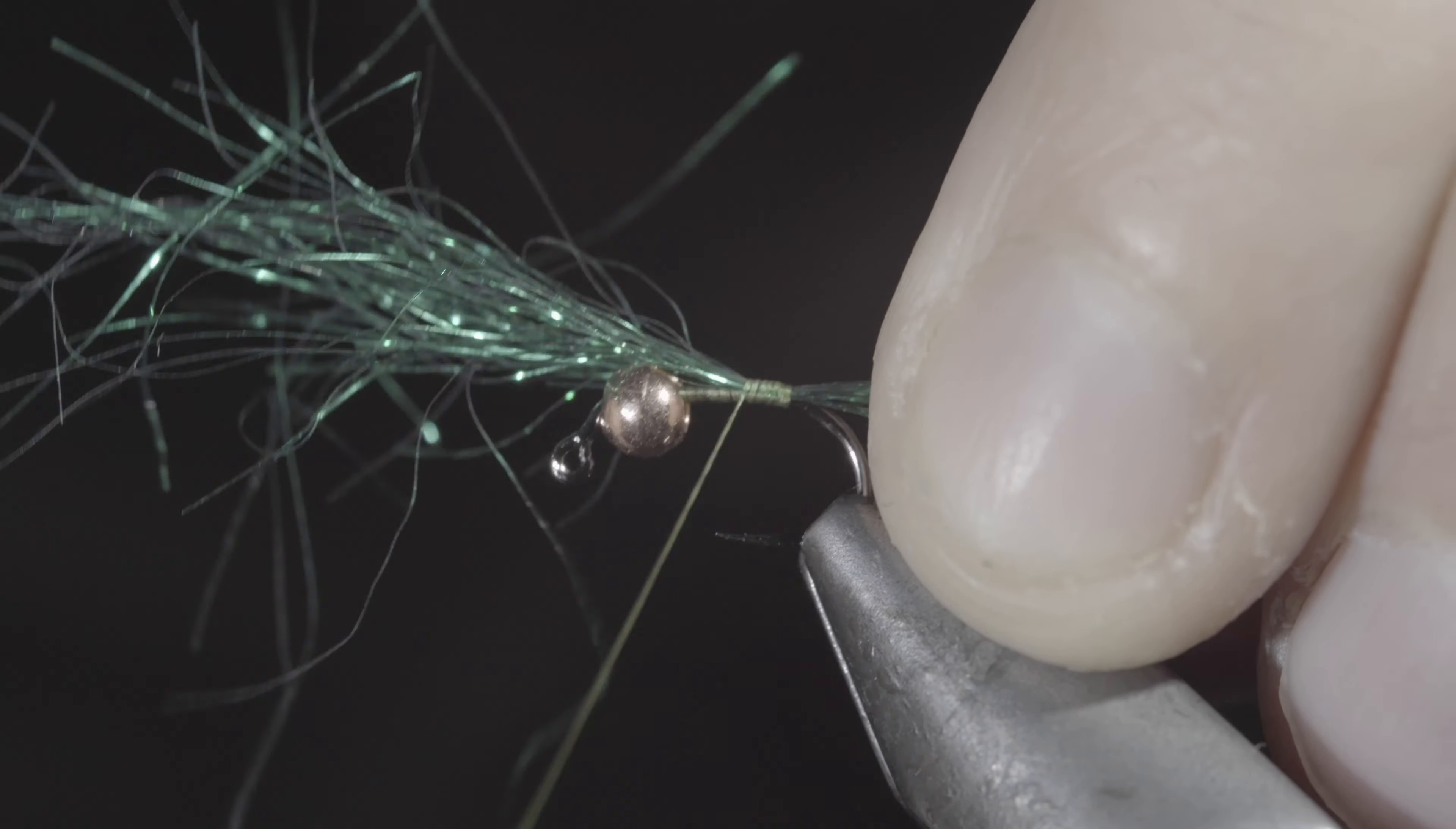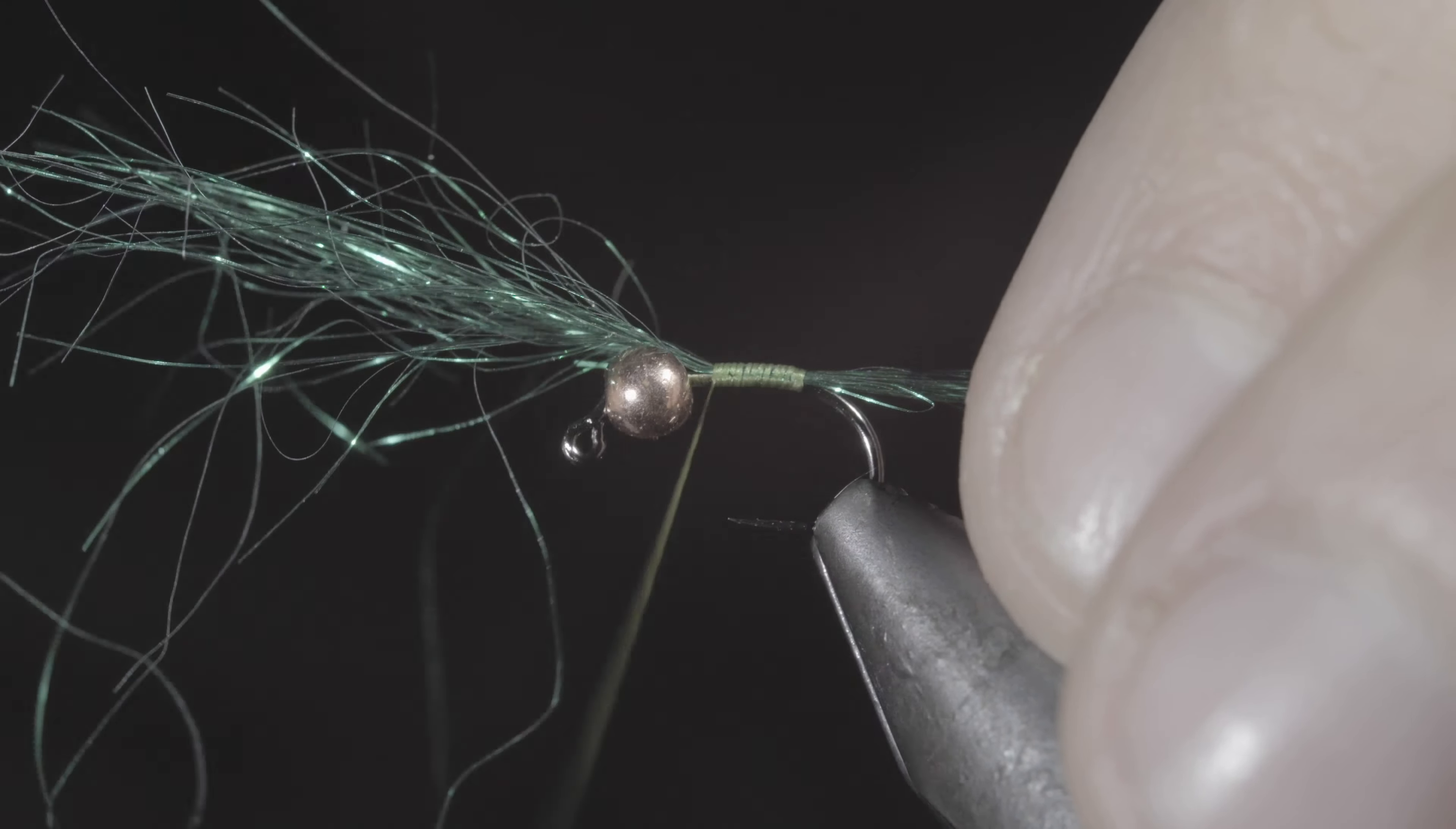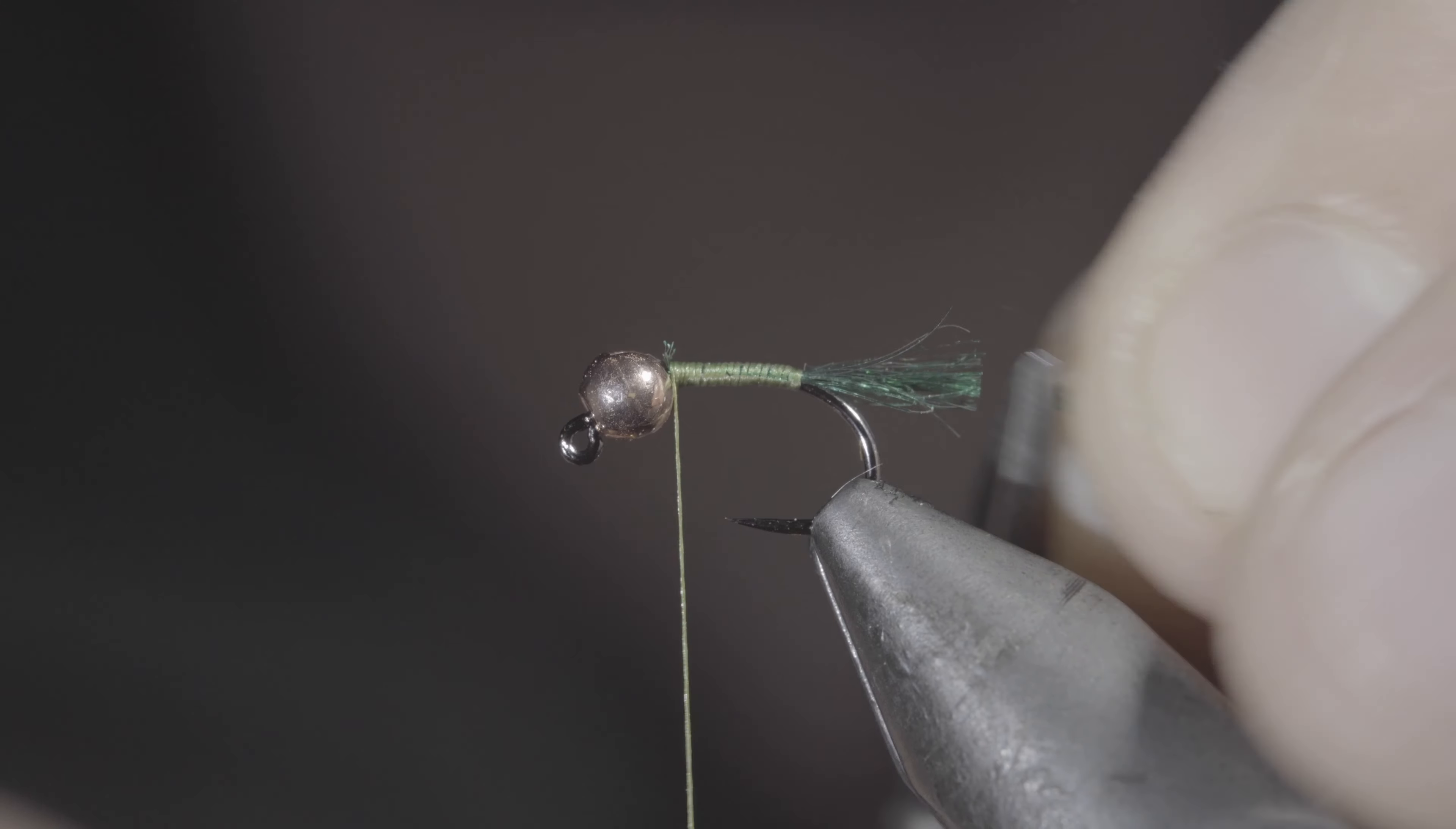Continue securing the synthetic fibers forward until you reach your hook eye. At which point, we'll snip the excess free and cut our tail to length. Next,